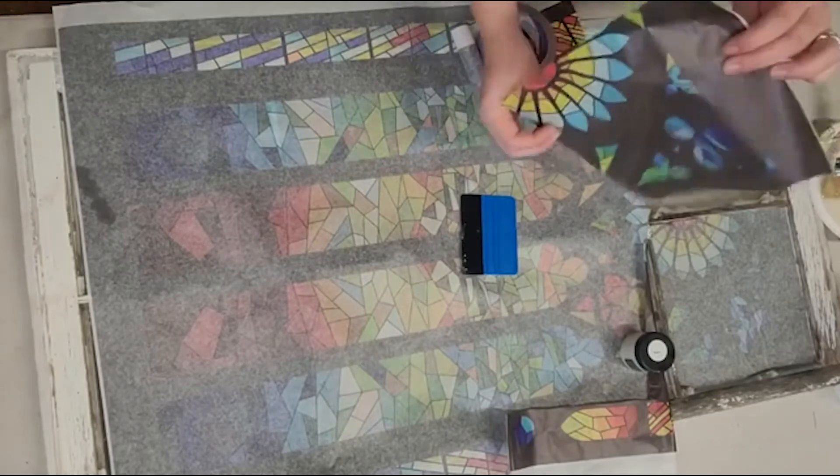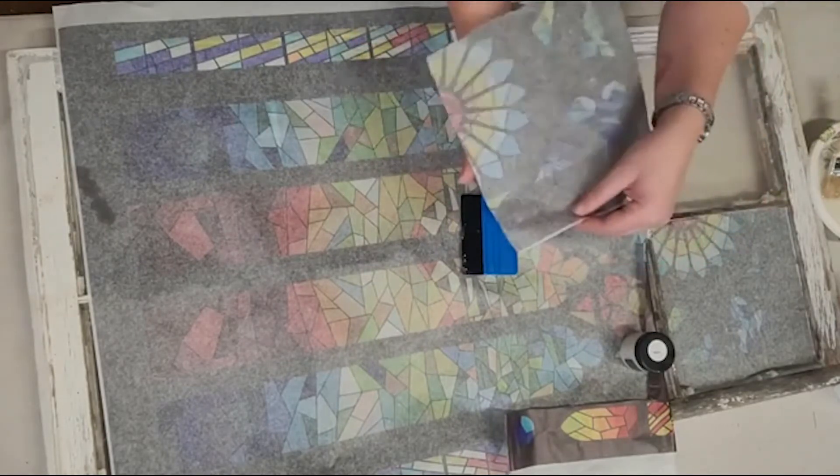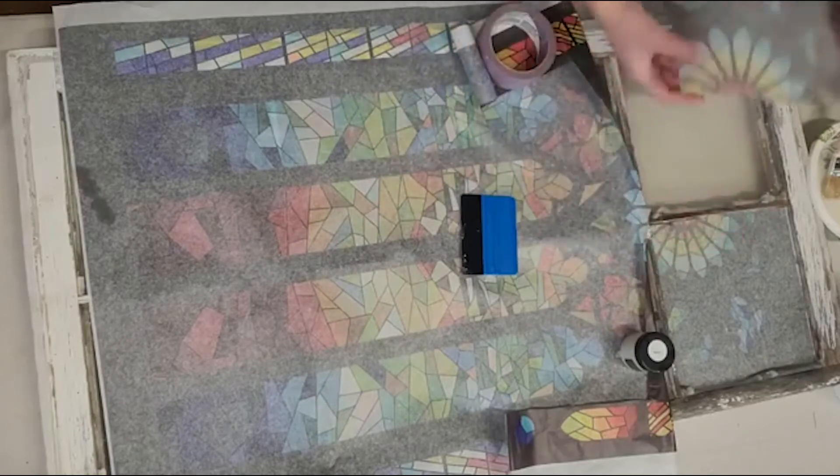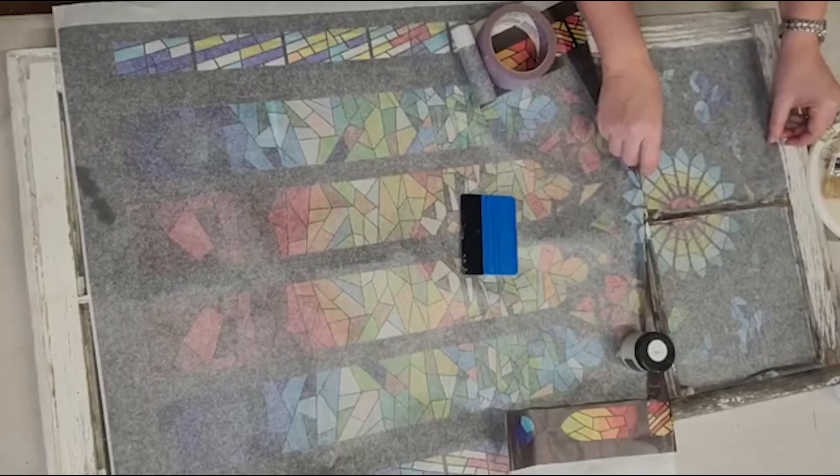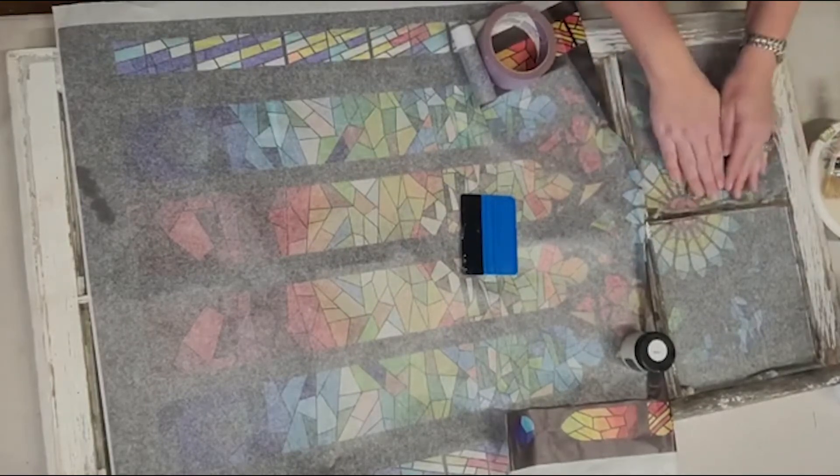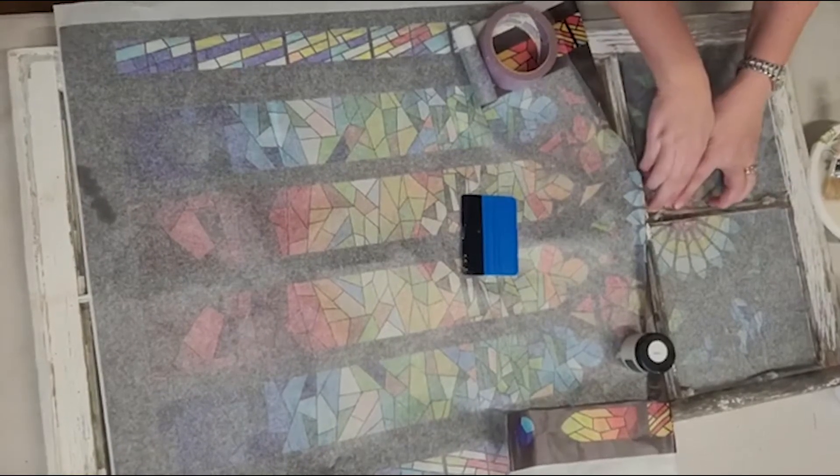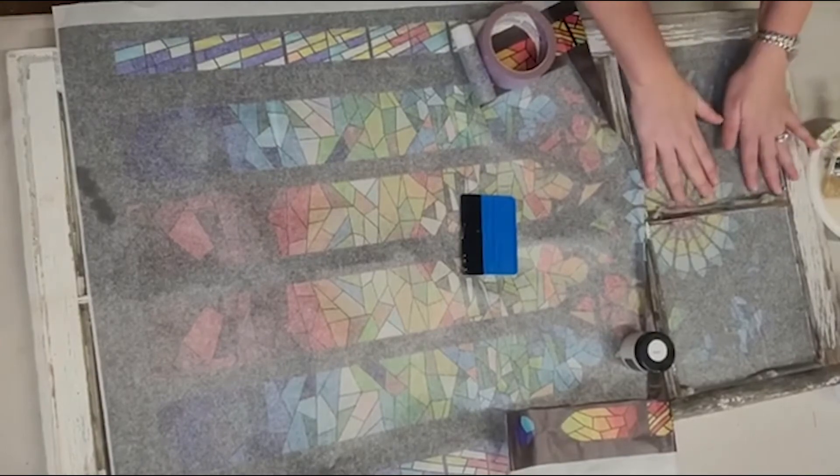So again, we're putting the image side on, image side down because we're going to have the image is what we want to see. A lot of times when we decoupage we put our decoupage medium on the back, but this time we're going to do decoupage front.